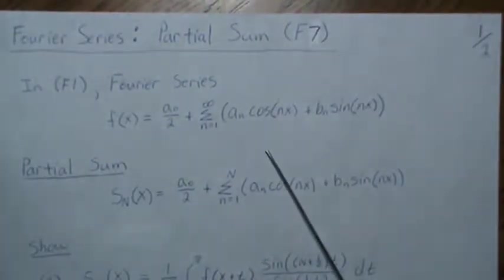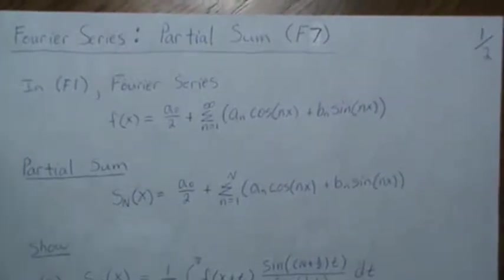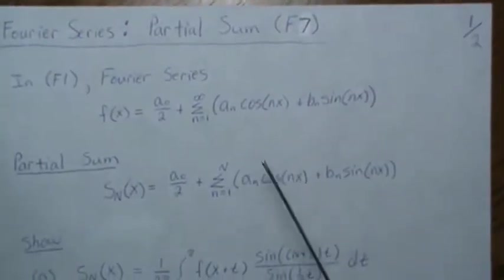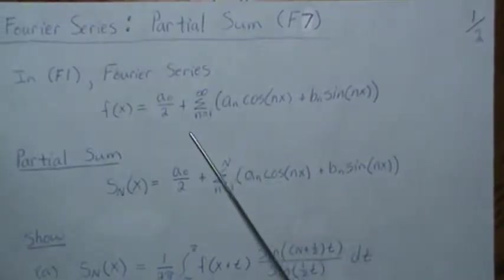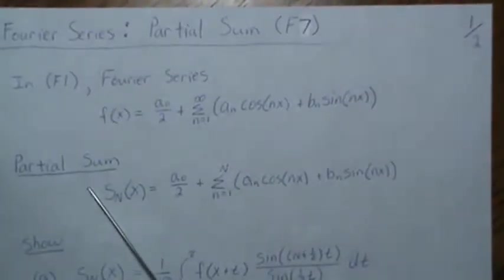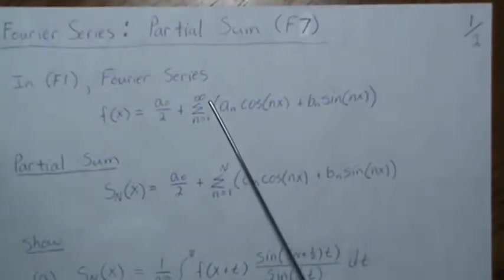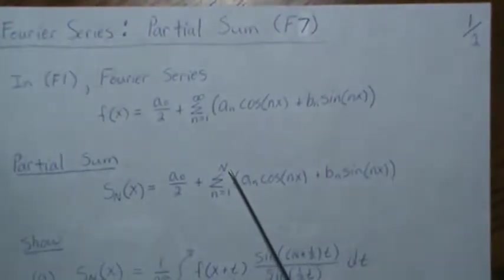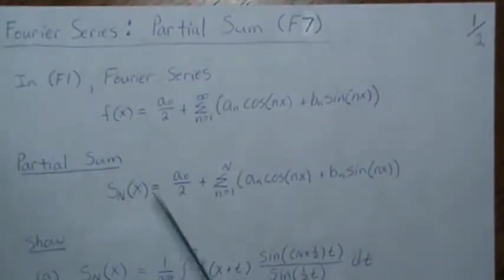It ends up making an orthogonal basis for our, in quotes, vector space. Here, a partial sum, instead of going to infinity, we go to some number capital N.